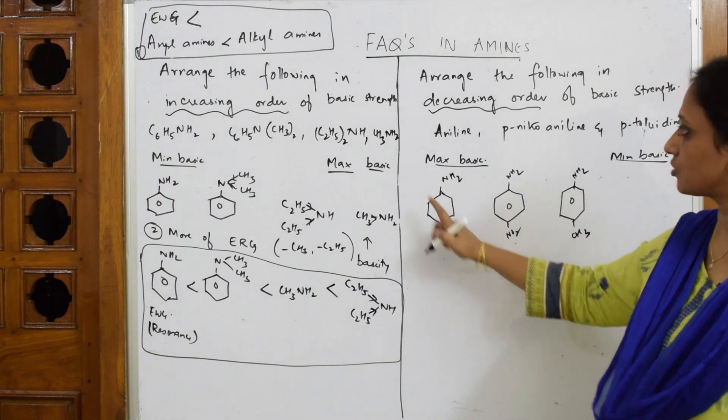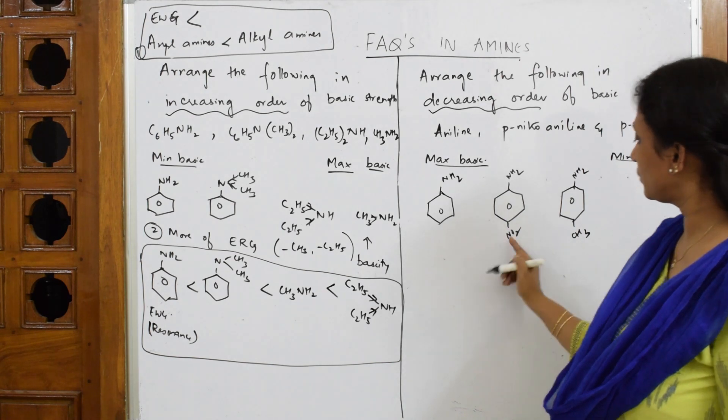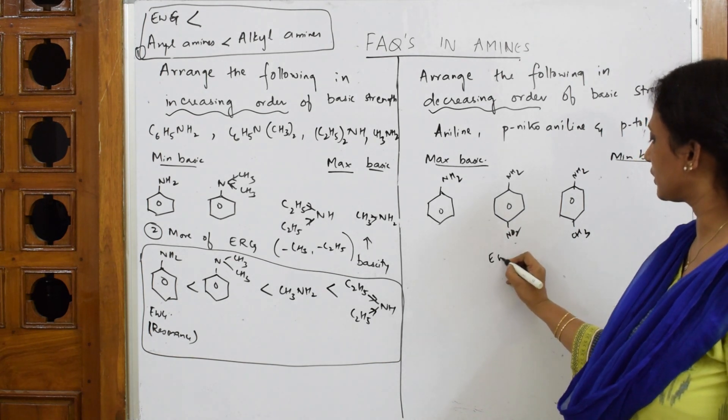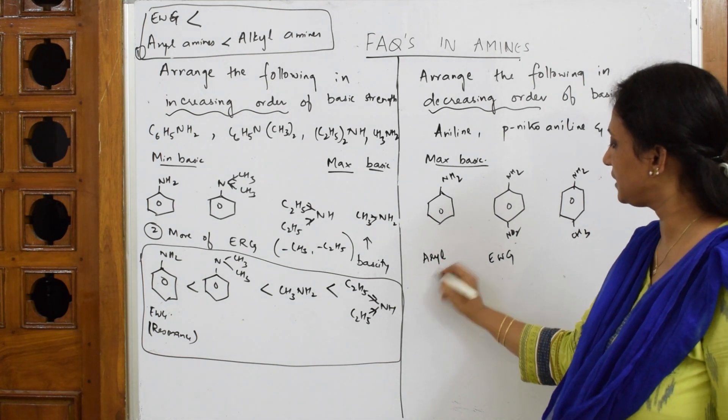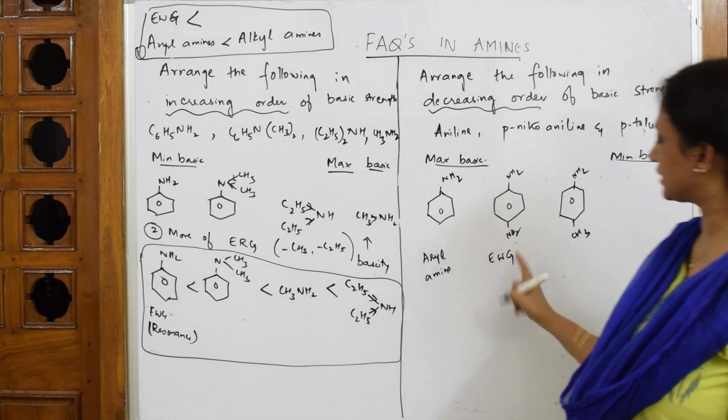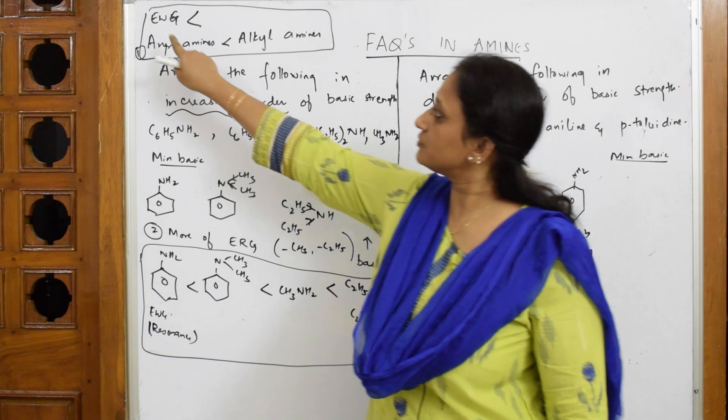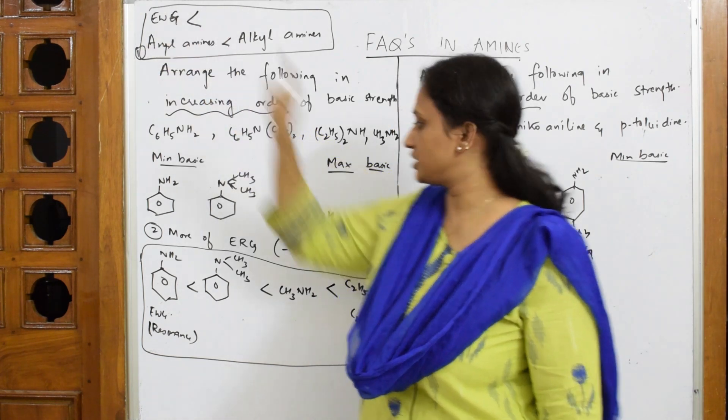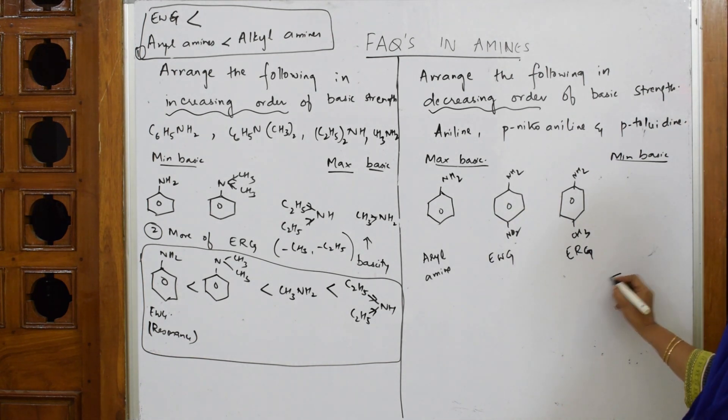very careful now. This is your arylamine, this is your electron withdrawing substituent, this is electron releasing substituent. Now come back to the sequence. First, least basic would be EWG. So what should I write? Maximum should be here, least should be here. So EWG group is least basic. And next I have to compare between this and this. The maximum basic in these two is what? This one